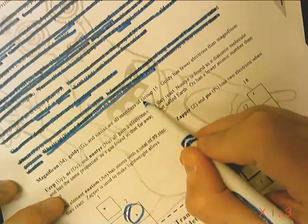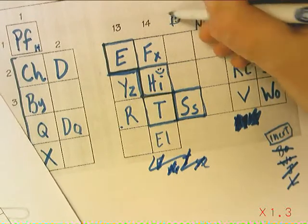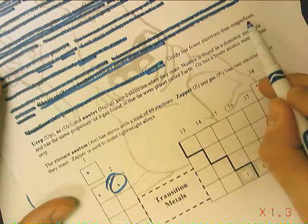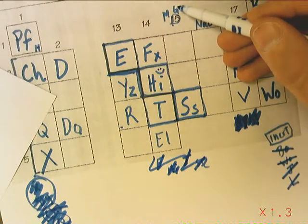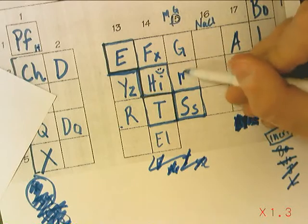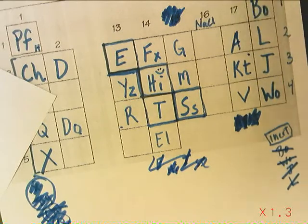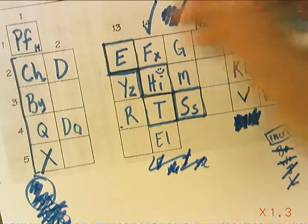MAGNIFICON and GOLDIE and SISSUS are all members of group 15. Here's group 15. M, G, and SS is already in there. GOLDIE has fewer electrons than MAGNIFICON. GOLDIE has fewer electrons. That means it's lighter. That must be GOLDIE, and this is MAGNIFICON. So I guess MAGNIFICON is phosphorus and GOLDIE is nitrogen. I'm done with that column.